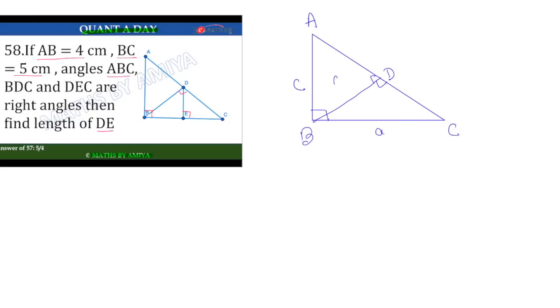So we can say the area ratio is nothing but c squared and a squared ratio. How? In front of 90 degrees we have c, in front of 90 degrees we have a. So the area ratio of ABD is in the form of c squared upon a squared.